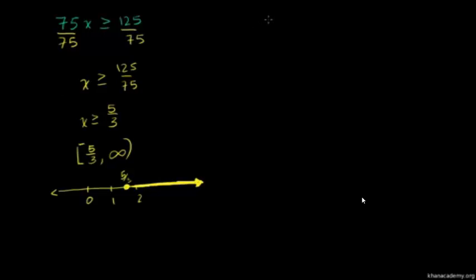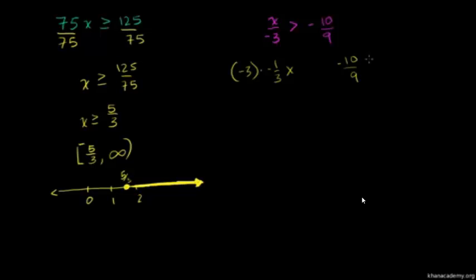Let's try x over negative 3 is greater than negative 10 over 9. We want to isolate x, so let's multiply both sides by negative 3. The coefficient is essentially negative 1 over 3, and the inverse is negative 3. Multiplying both sides by negative 3 and swapping the inequality — it goes from greater than to less than. The left-hand side becomes just x, and the negatives cancel out.